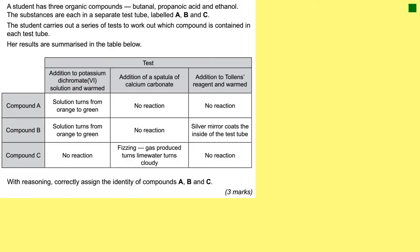Here's another exam-style question. A student has three organic compounds: butanal (an aldehyde), propanoic acid (a carboxylic acid), and ethanol (a primary alcohol) in test tubes A, B and C. She carries out a series of tests to work out which is which. The easy one is the calcium carbonate test: compound C gives fizzing and cloudy lime water, so we know compound C is the carboxylic acid.